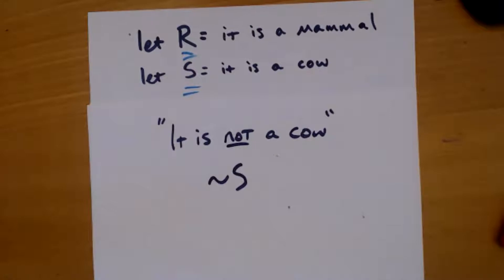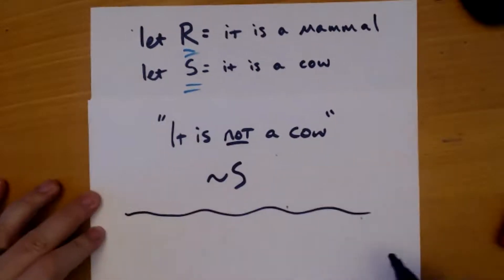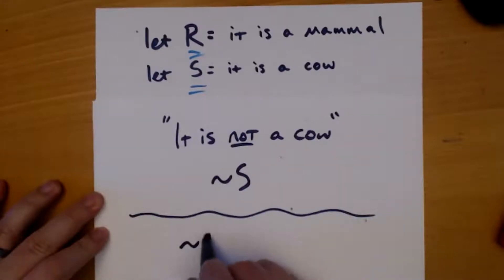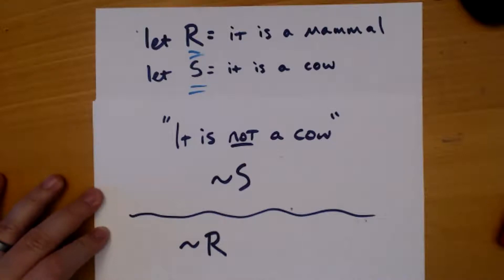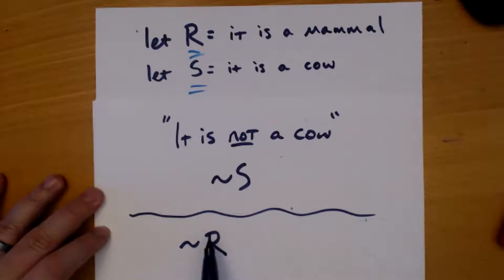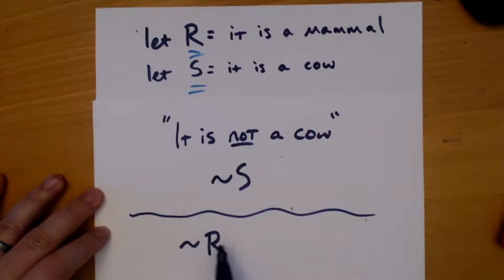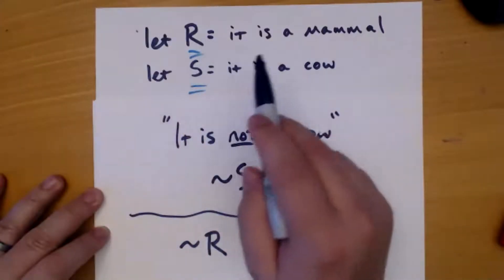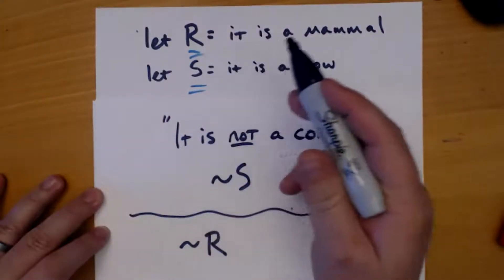Let me ask you: what if we went the other way and I wrote the squiggly sign followed by R? What would that sentence be? Well, R was 'it is a mammal,' but I've got the negation symbol in front, so it's 'it is not a mammal.' This is the negation of R — you look up what R is and negate it.